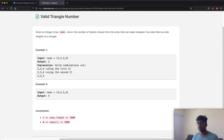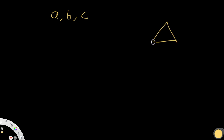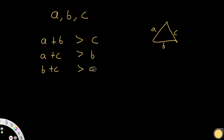Given the lengths, how do we know whether it is a valid triangle? There's a simple rule: any two sides when added up must be greater than the third side. So if we have three sides a, b, c, then a+b > c, a+c > b, and b+c > a. If all three conditions are true, we have a valid triangle.